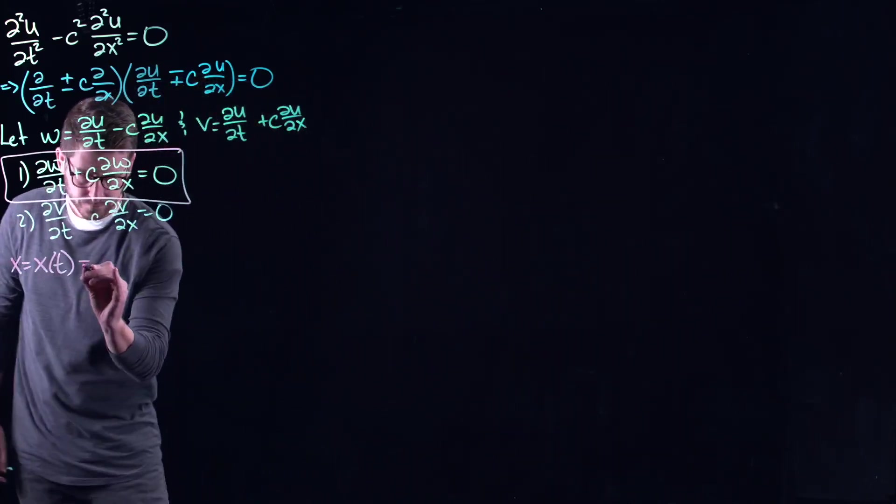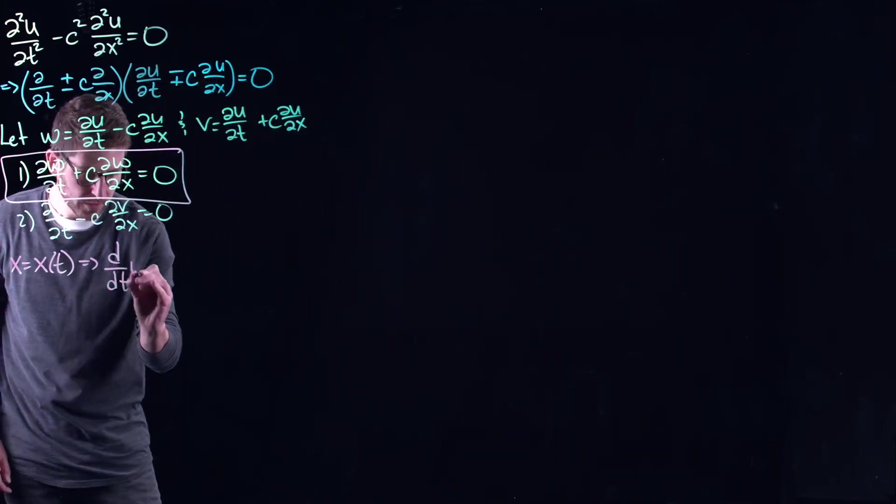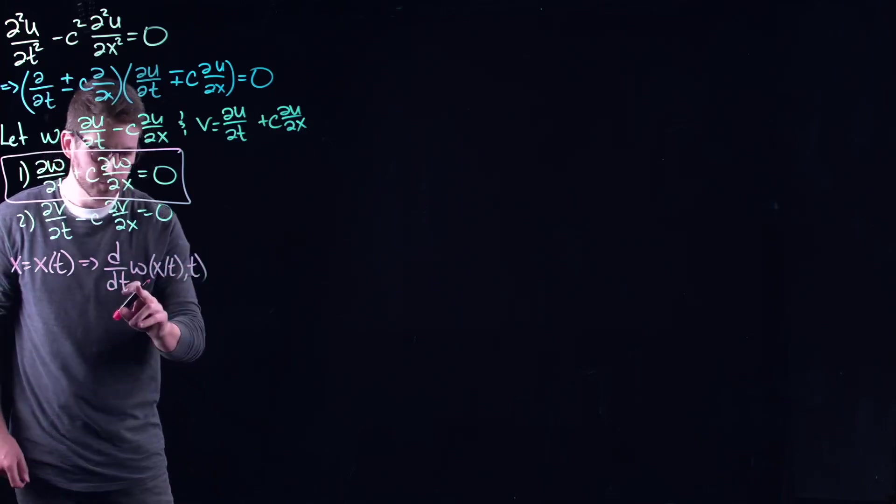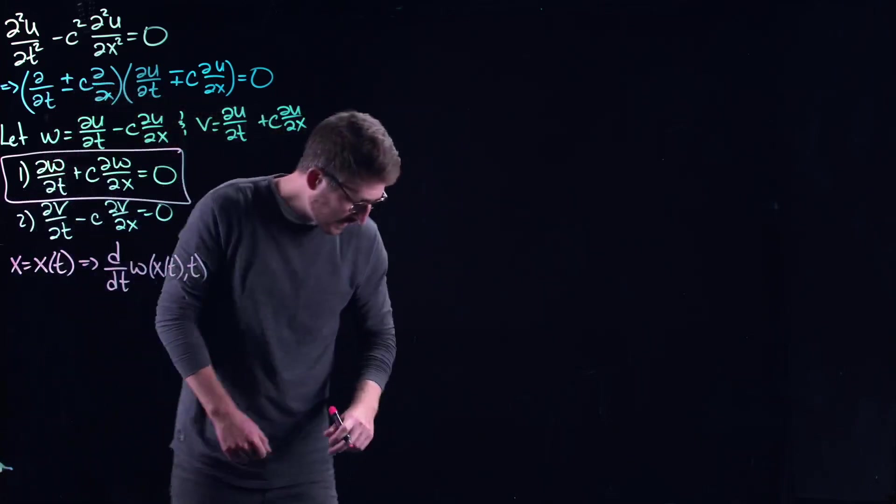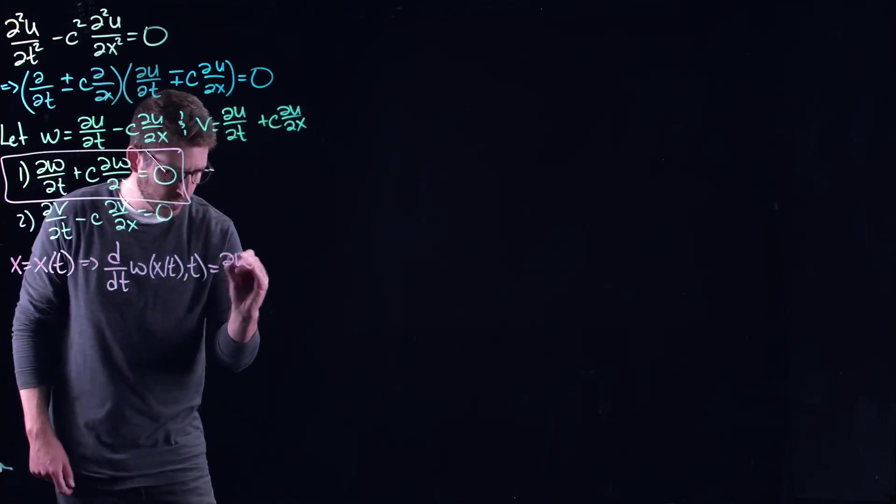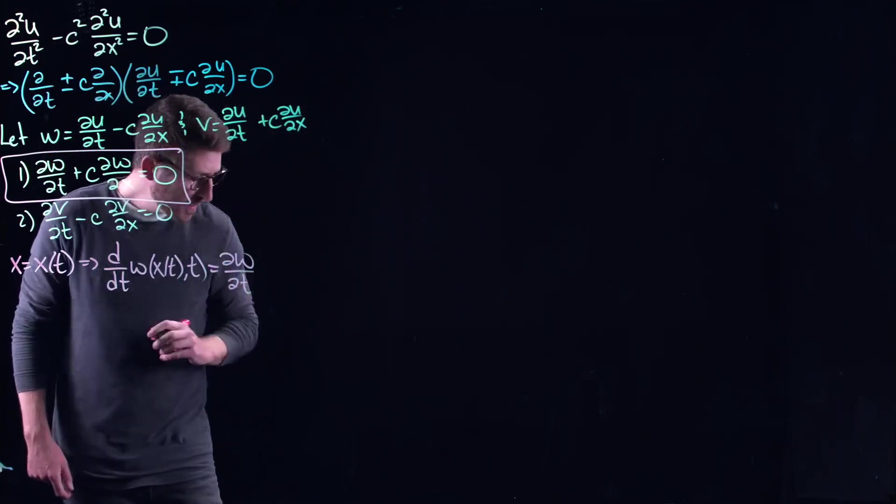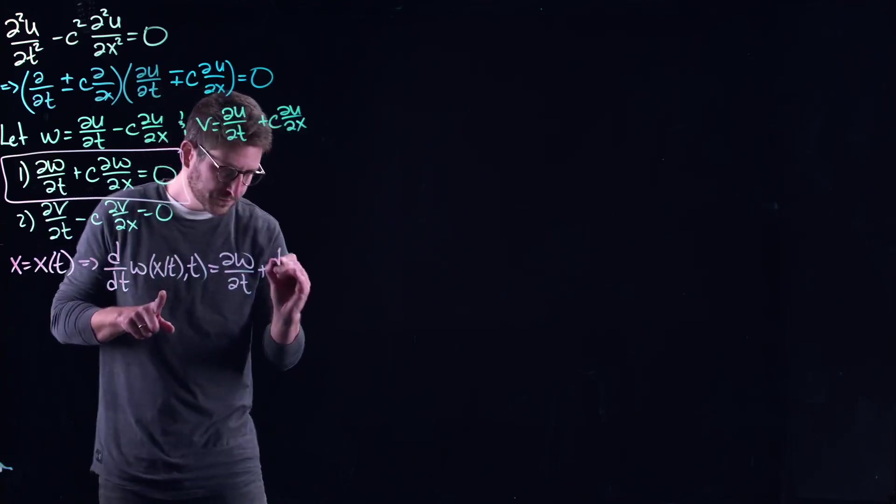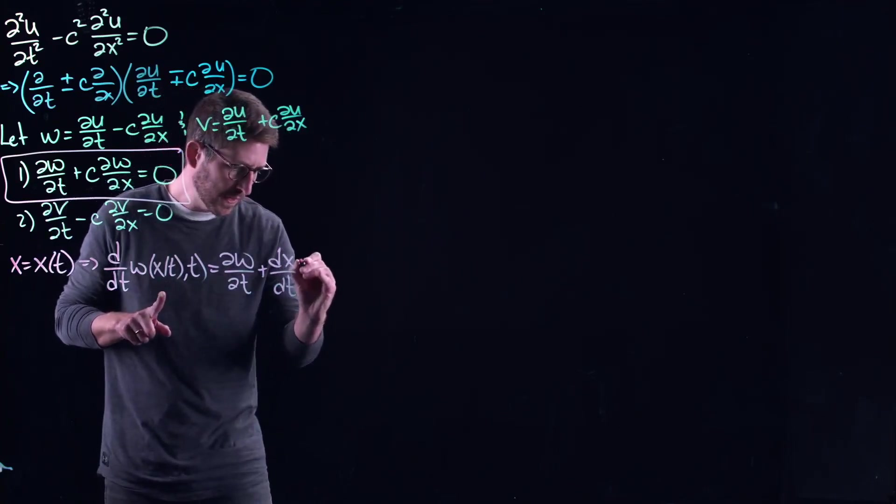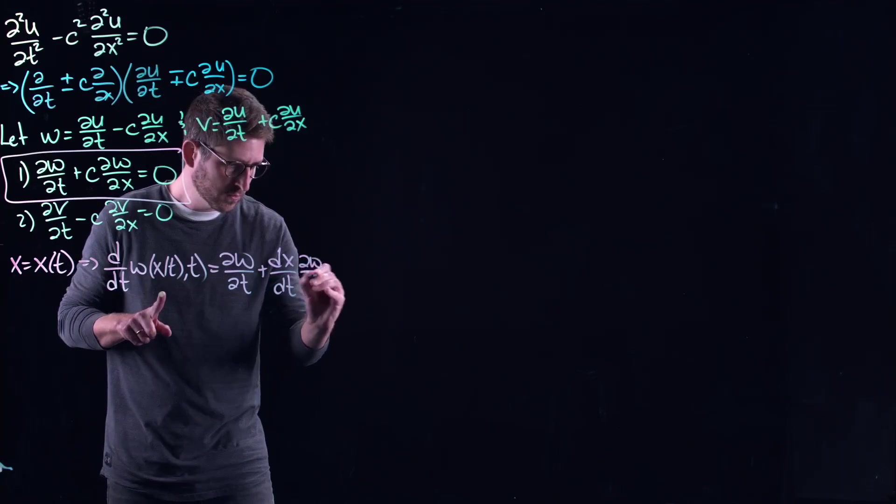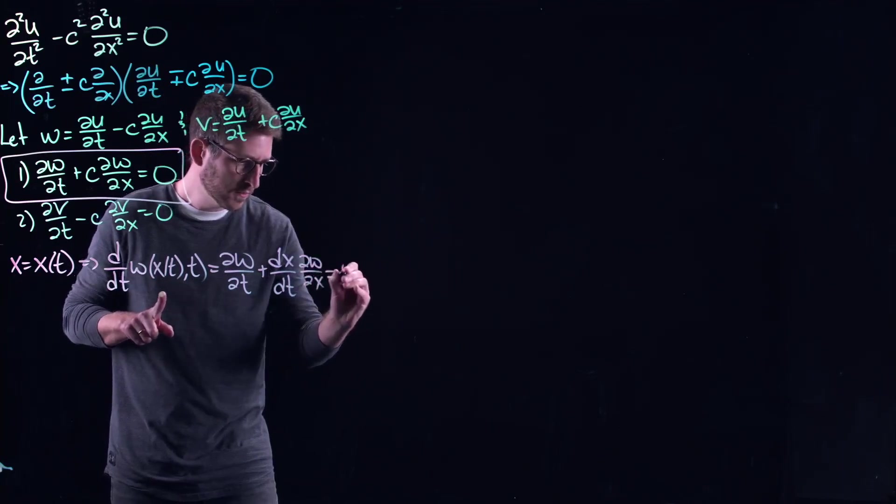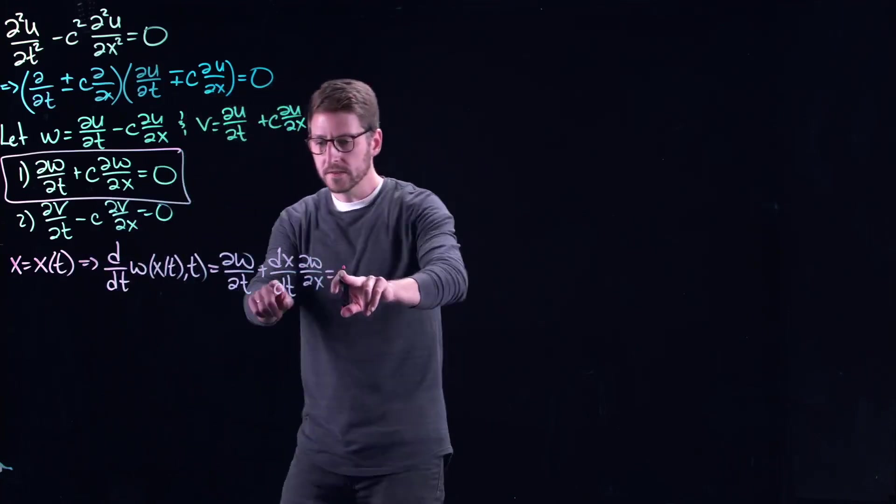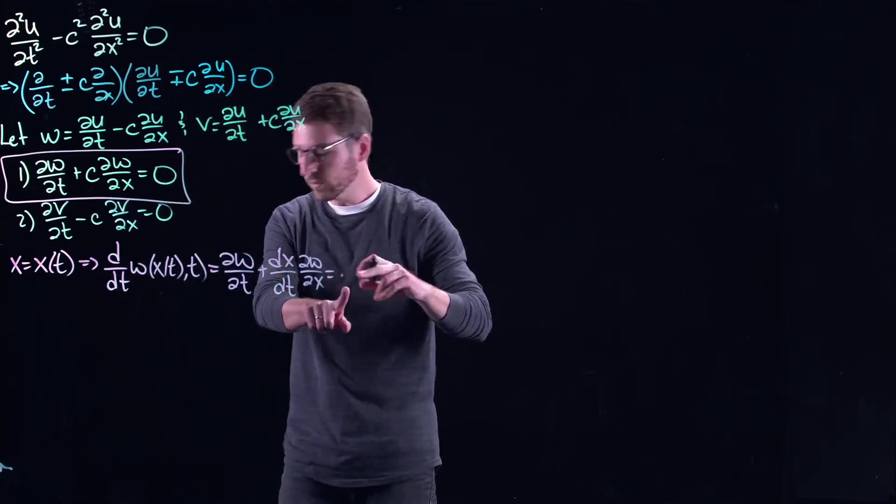Well, first of all, if I take the derivative of the solution of this equation, assuming it exists, in this case I get a total derivative. So I get partial w/partial t, and then the chain rule comes out, and I get dx/dt times partial w/partial x.